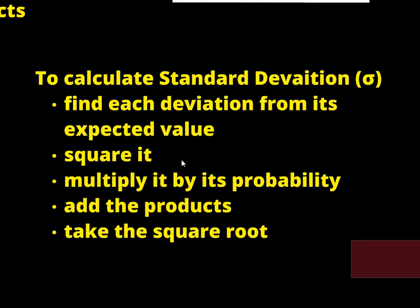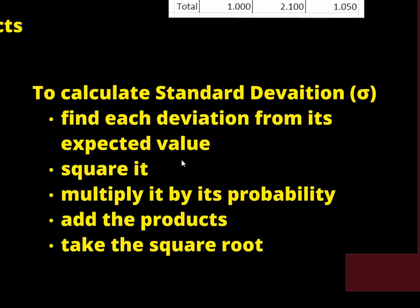We also have the standard deviation, which again, just like in standard deviation when we did with means in chapter 2, we find the deviations from the mean. Now in this case, because it's a probability, we square them because we're going to have positives and negatives. We multiply it by the probability, we add them, and then we take the square root.